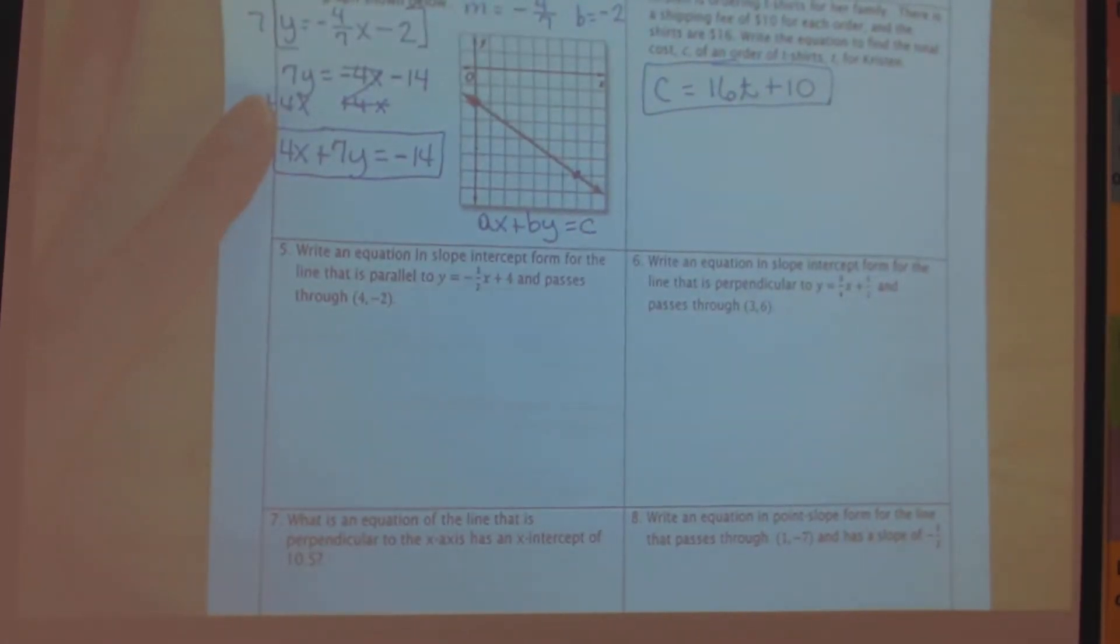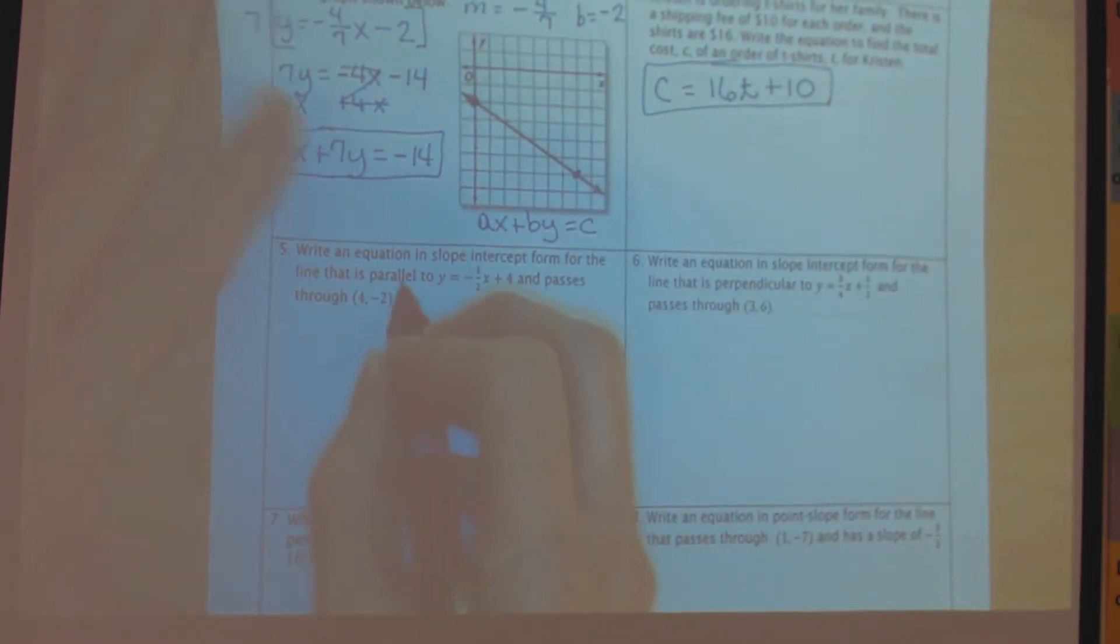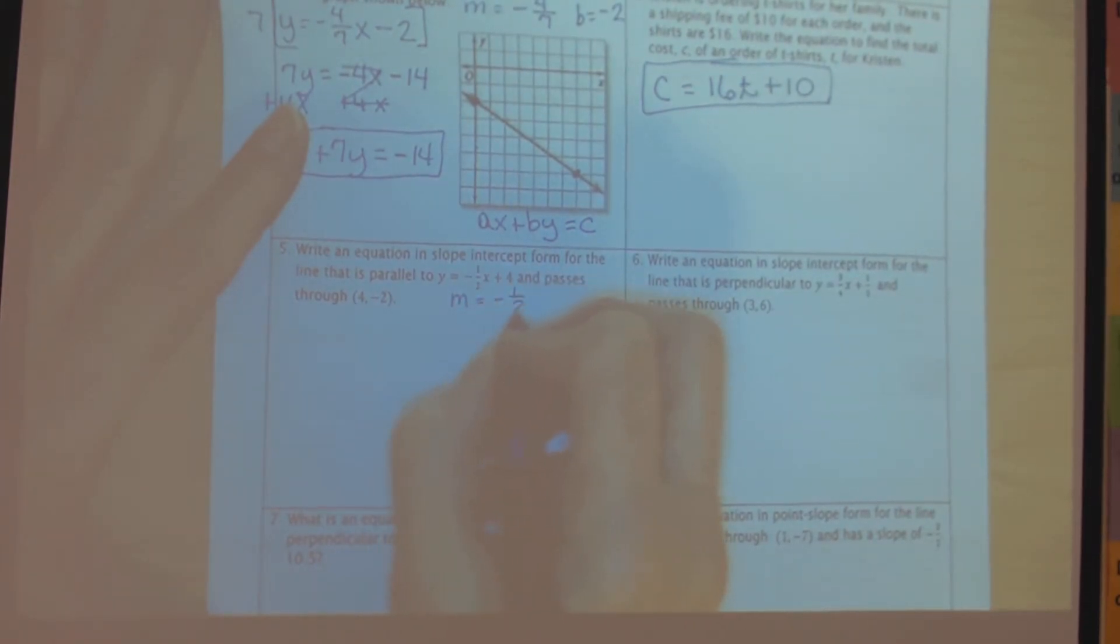And here we have, for number 5, we need to write an equation in slope-intercept form. So it's going to look like this one, because this one's already in slope-intercept form. And we need our new equation to be parallel to this equation. So in order to be parallel, we know that their slopes have to be the same. So the slope of this first one is negative 1 half, so that means the slope of my new line is going to have to be negative 1 half.